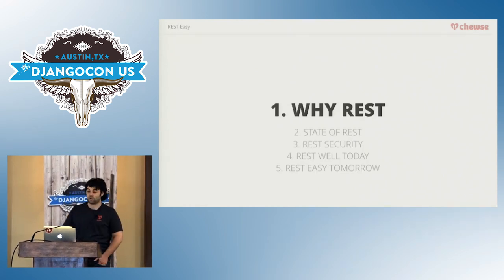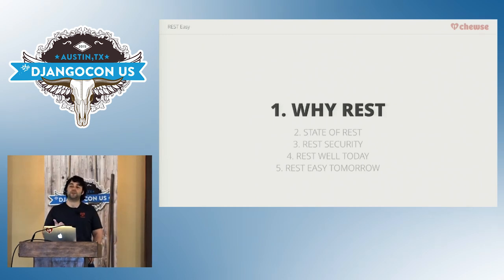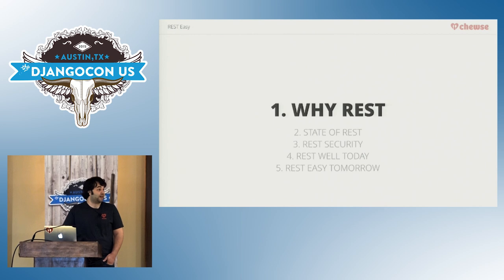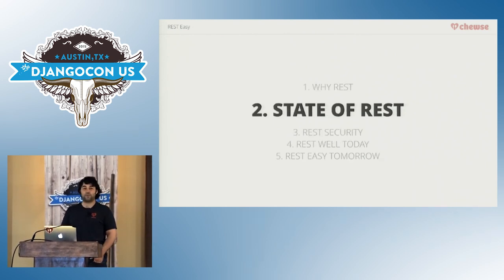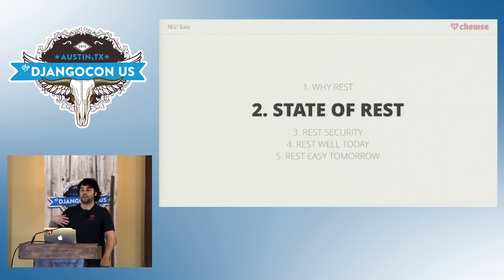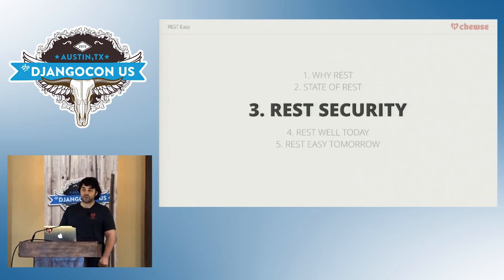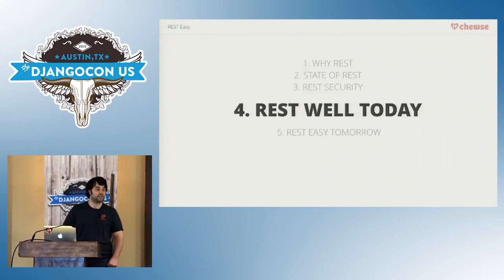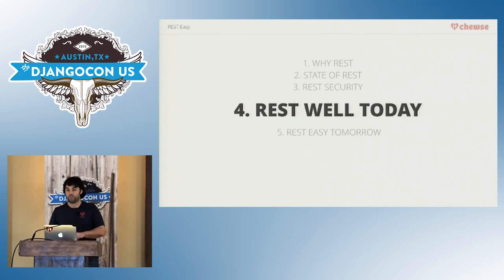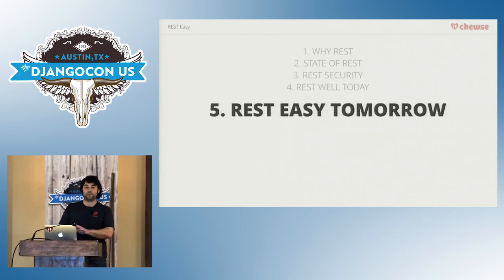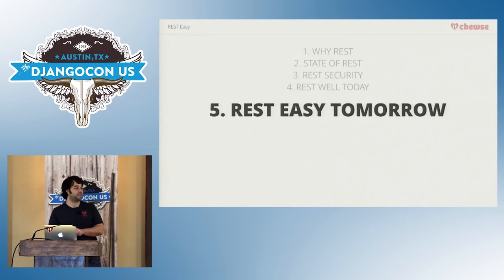So what are we going to go through today? We're going to talk about why REST — why is this important right now, why are REST APIs a big deal? We'll talk about the state of REST today, so if you're writing a Django app and you want a REST API, what do you do? Then we'll get into security: a quick overview of the considerations around security and authorization when you're doing a REST API. We're going to talk about strategies to write clear, maintainable permission schemes. And then we'll talk about what I hope happens tomorrow.